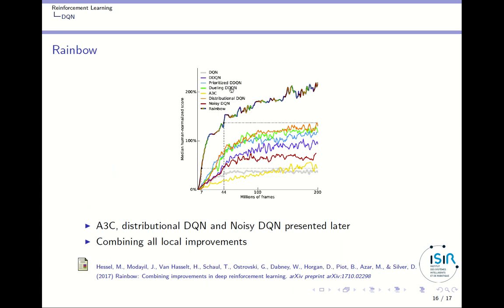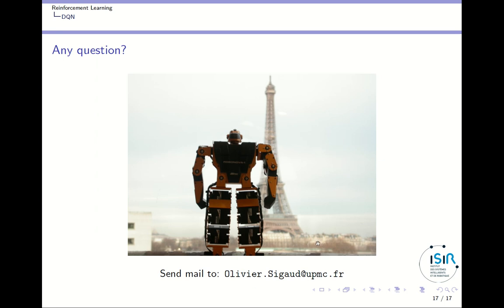Finally, combining all these improvements — Dueling Networks, Prioritized Experience Replay, Double DQN, and others — gives the algorithm called Rainbow, which is approximately eight times more performant than the original DQN. When the DQN paper was published in Nature, performance was at human level for Atari games; with Rainbow, the system is eight times more efficient than humans at learning to play those games. That concludes the DQN section. We will now switch to the continuous action domain.